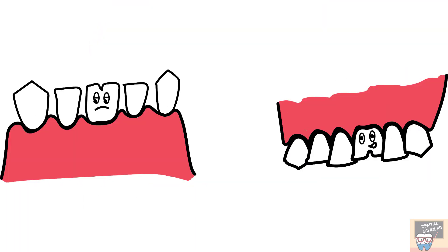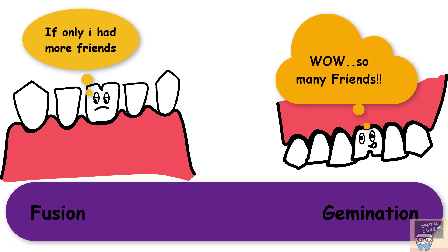The next point is the number of teeth. In case of fusion, less than the normal number of teeth would be present in the arch, whereas in case of gemination, more than the normal number of teeth might be seen. In cases where fusion is between a normal tooth and a supernumerary tooth, the picture appears similar to gemination and it becomes difficult to differentiate between the two.